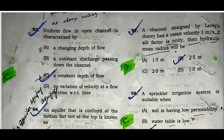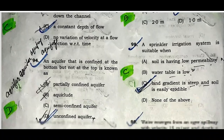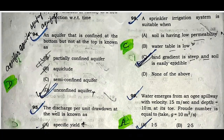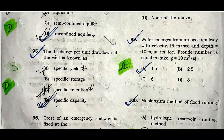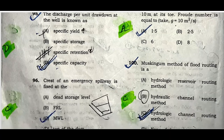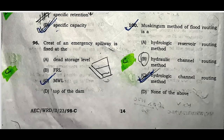Question ninety-three: Uniform flow in an open channel is characterized by a constant depth of flow. Question ninety-four: An aquifer that is confined at the bottom but not at the top is known as an unconfined aquifer. Option D is correct. Question ninety-five: The discharge per unit drawdown at the well is known as specific capacity. Option D is correct.